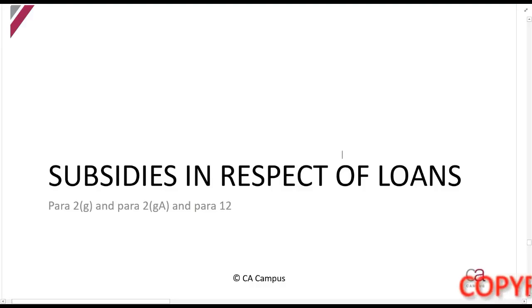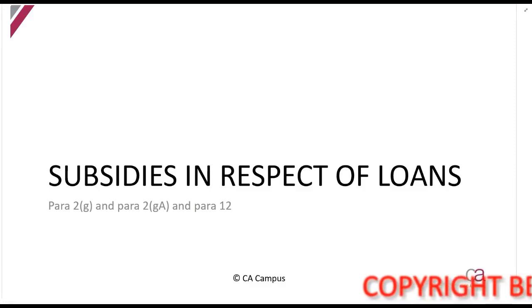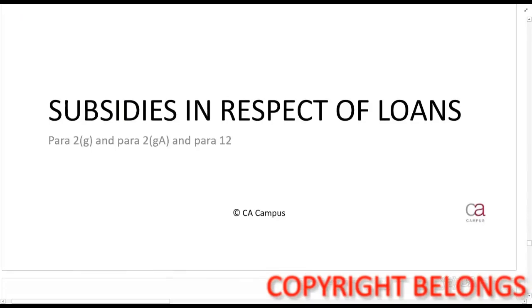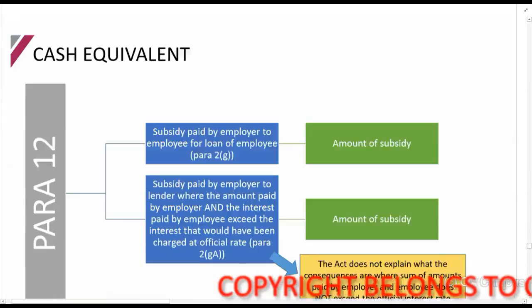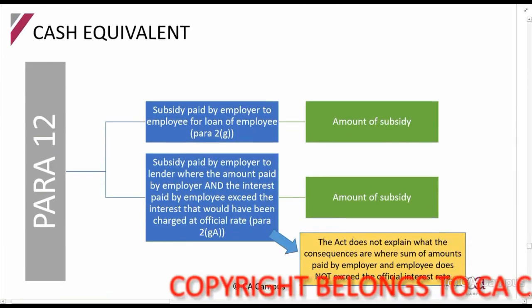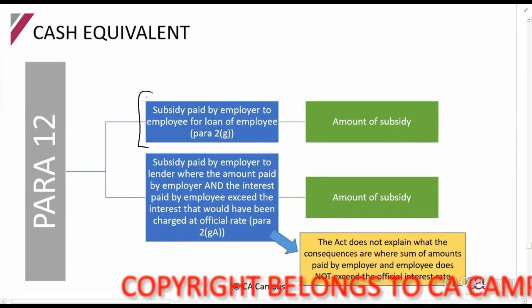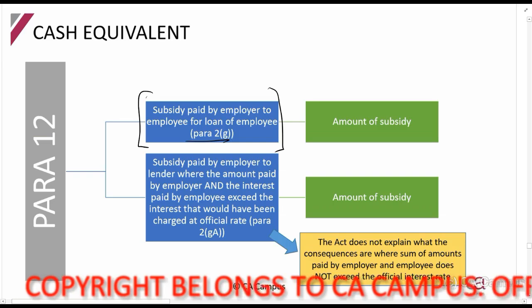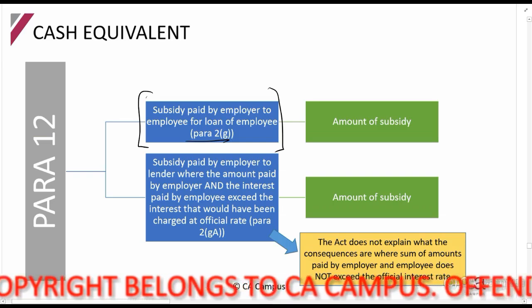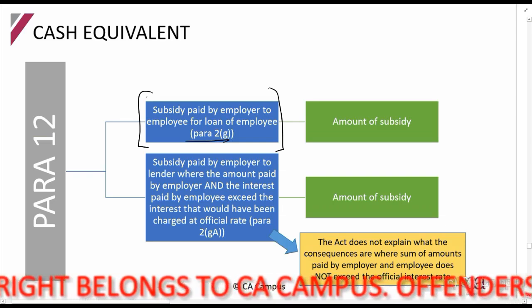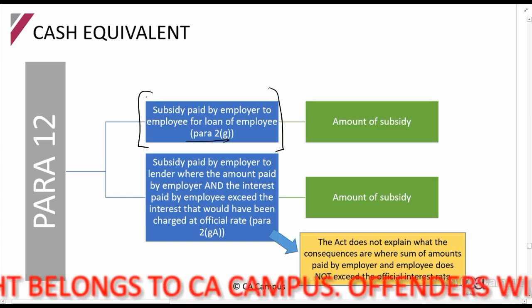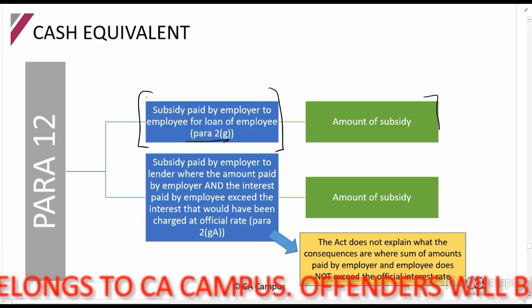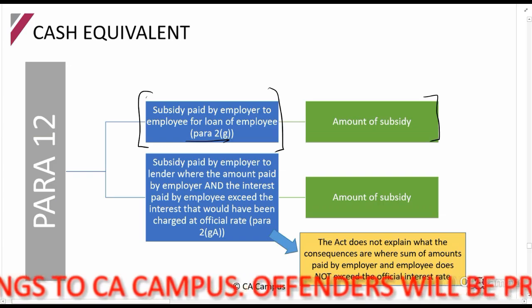Subsidies in respect of loans — this fringe benefit is a situation where the employer pays a loan on behalf of you. By far the most important and common one is found in paragraph 2g, which is where the employee owes the bank 500,000 rands for their house and the employer pays that 500,000 rands. Whatever the amount of the subsidy is that you receive, that is the amount that will be taxed.